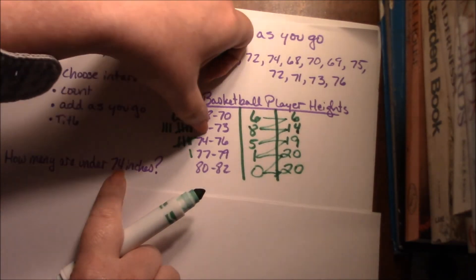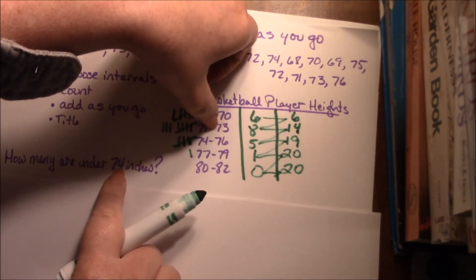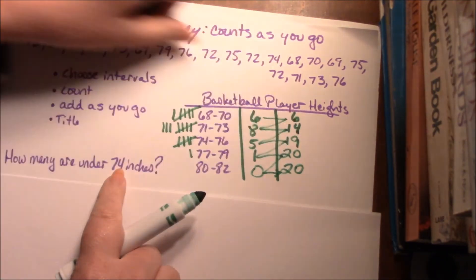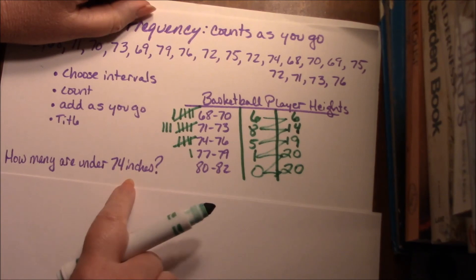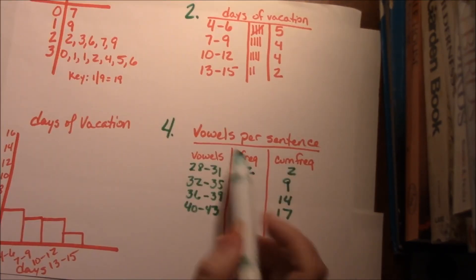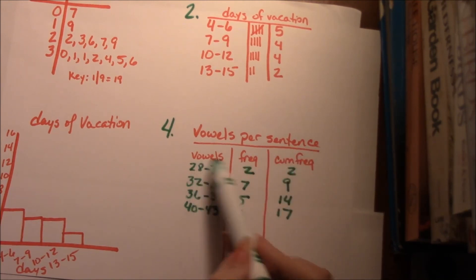So when they say how many are under 74 inches, that does not include 74. So that's 73 and less. That's here up, so that's going to be 14. Make sense? Please do checkpoint number four. Pause here and come back when you're done.